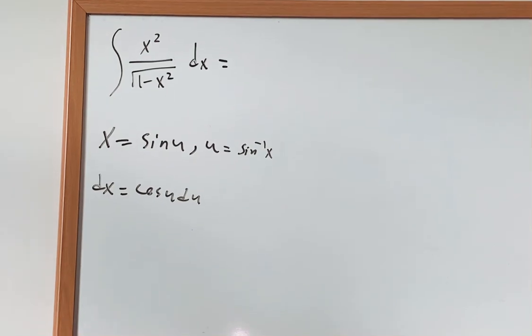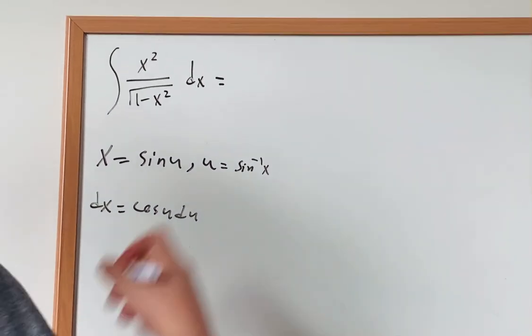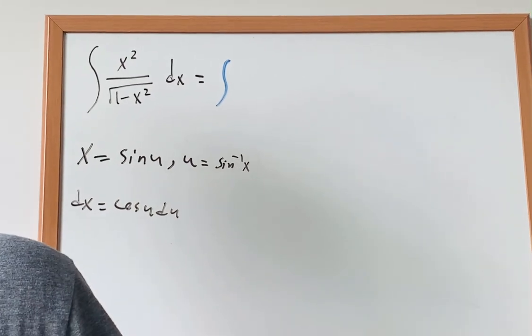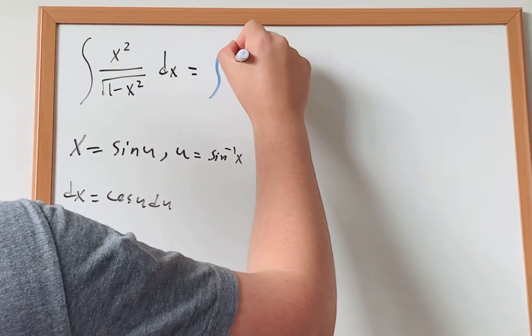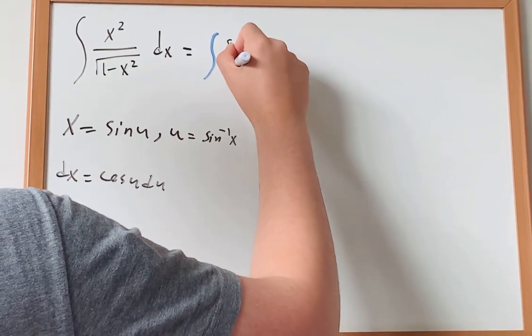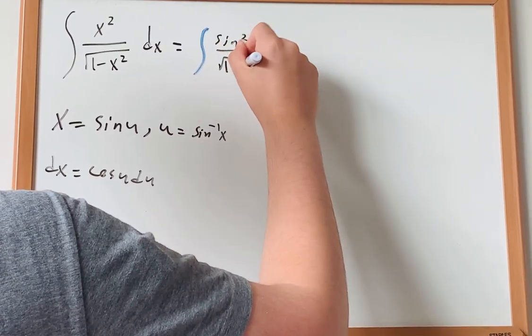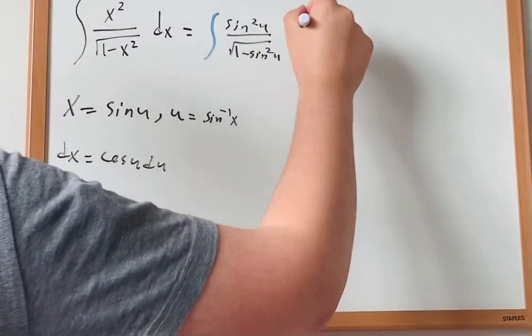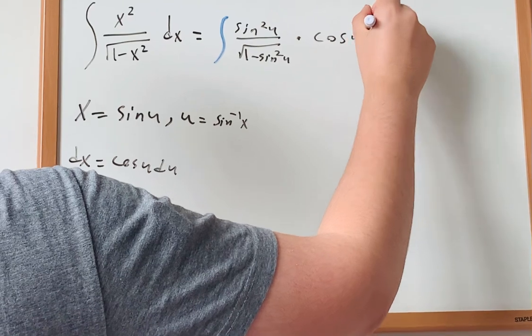So now I just plug in. For my answer, I get the integral, and then inside is just x squared, which in this case is sine squared u, over the square root of 1 minus sine squared u multiplied by dx, where in this case dx is cosine u du.